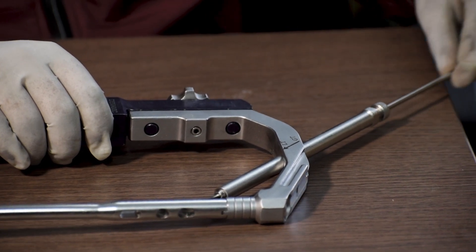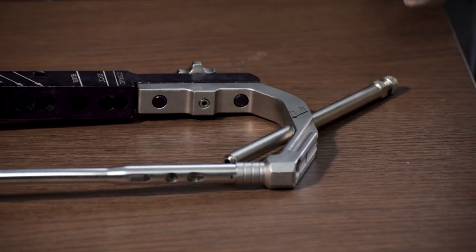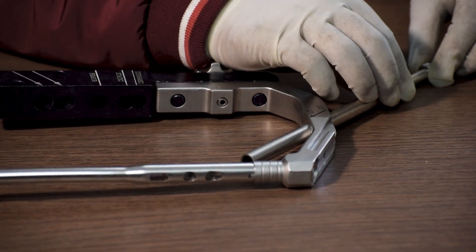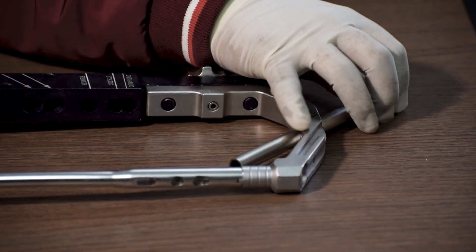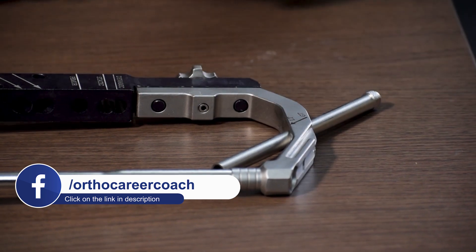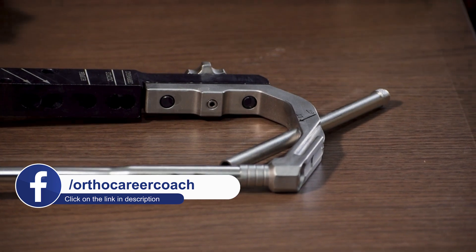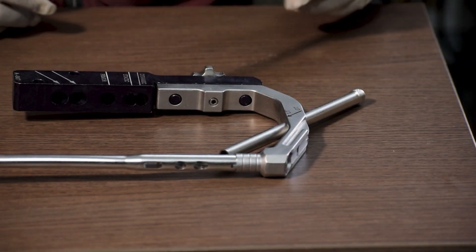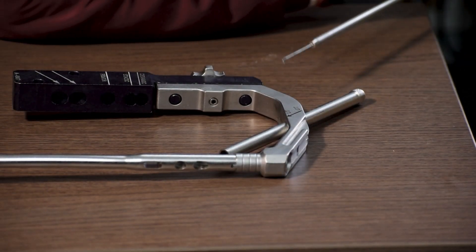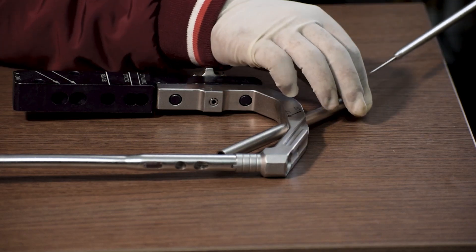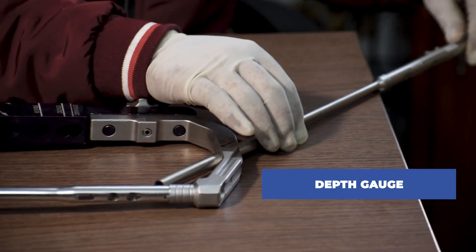After the drilling is done, we will remove the drill sleeve. And then we will use the depth gauge in order to take the measurement of the length of the interlocking bolt required.